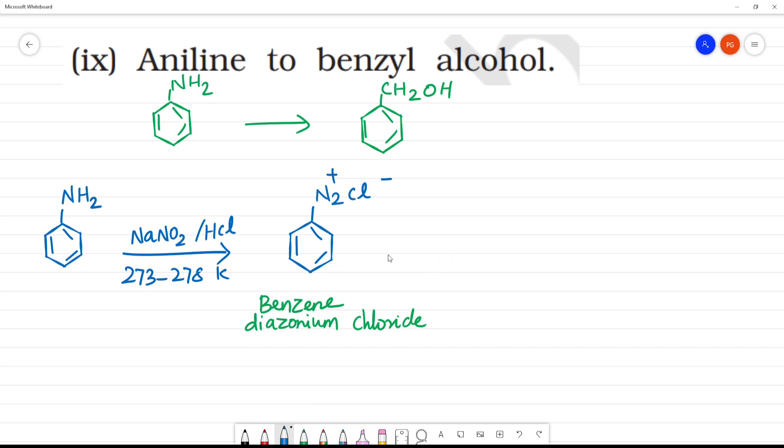Next, we introduce a CN group. So CuCN, the CN group will be introduced. N2Cl is removed and CN is added. So this is benzonitrile.